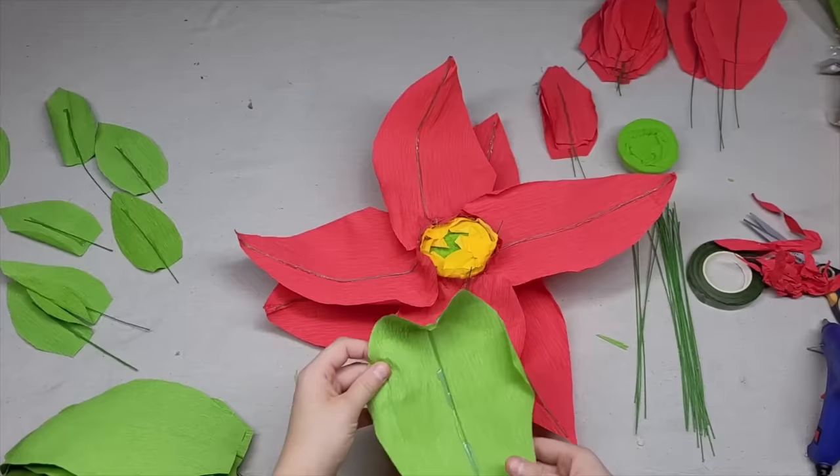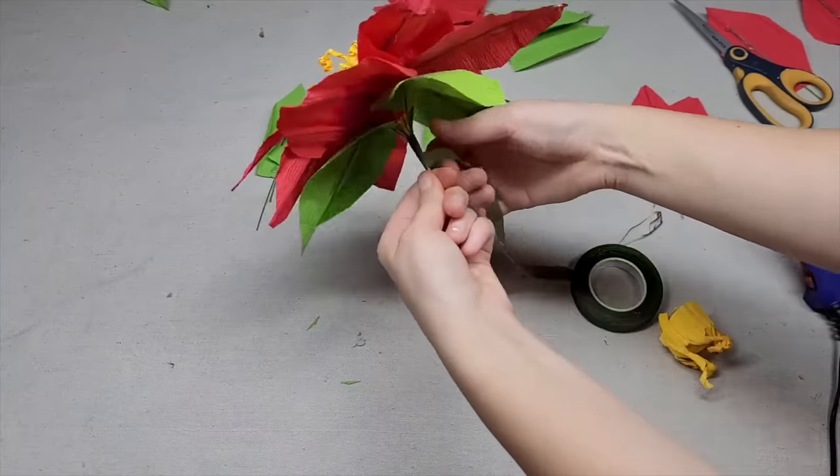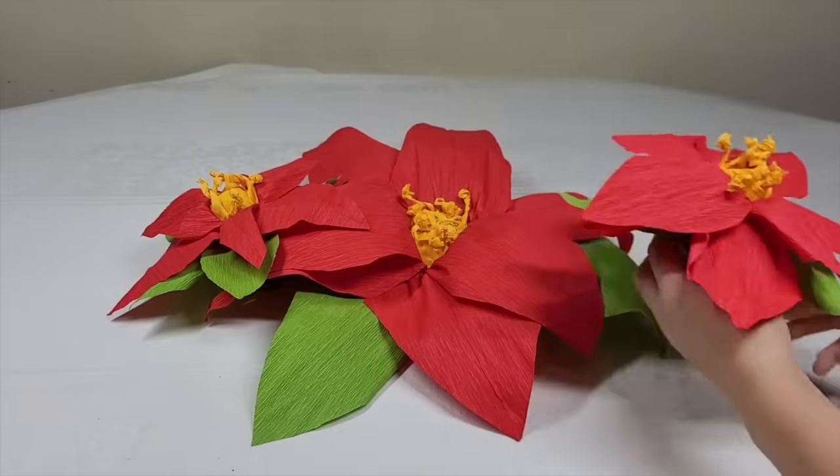Now we're going to go and start to glue the petals and take some more green paper. Then I went and I wrapped it with some floral tape. The largest one in the center and the two small ones at the sides.